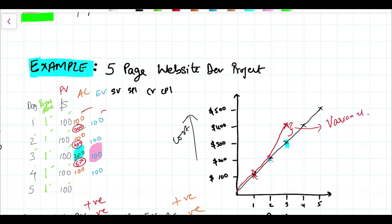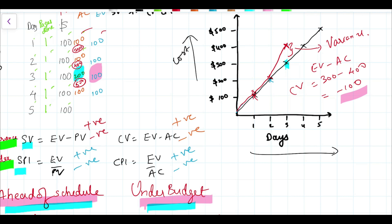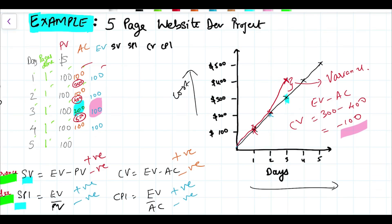Cost variance = earned value minus actual cost = $300 minus $400 = negative $100. Since the cost variance is negative, the project is over budget. The actual cost has exceeded the earned value, so you have a cost problem and need to act.